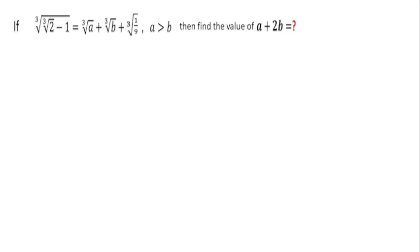Welcome to Definite Mind. In this question it is given: cube root of (cube root of 2 minus 1) is equal to cube root of a plus cube root of b plus cube root of 1/9, and a is greater than b. We have to find the value of a plus 2b. This type of question is very interesting because many people don't know how to start solving it.